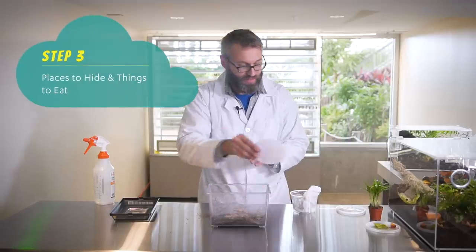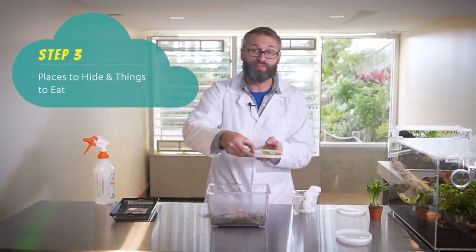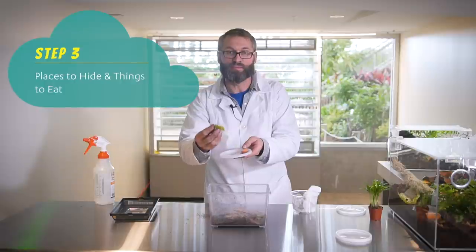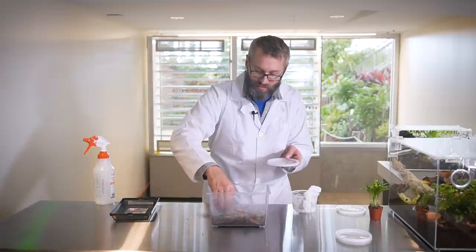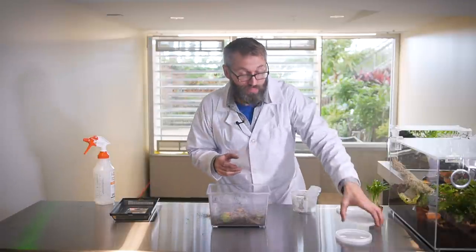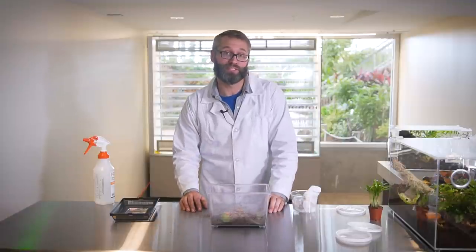And then a lot of the things you'll be finding in your backyard are herbivores. So just take some lettuce or some sweet potato, put it in there like that and now you've got pretty much everything you need for your little critters to be happy.